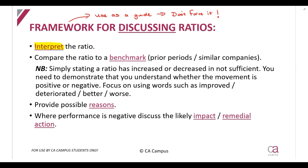Now sometimes you'll see that there aren't any marks available for interpreting a ratio, and that's if the ratio is self-explanatory. For example, if you've calculated the movement in revenue, the movement in revenue is the movement in revenue — so there won't be any marks available for interpreting that ratio. The same applies to the gross profit or net profit margin. Because they are self-explanatory, there won't be any marks available. You'll see this often applies to profitability ratios.